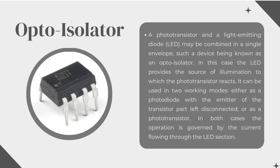Optoisolator. A phototransistor and a light-emitting diode (LED) may be combined in a single envelope; such a device is known as an optoisolator. The LED provides the source of illumination to which the phototransistor reacts. It can be used in two working modes: either as a photodiode with the emitter of the transistor part left disconnected, or as a phototransistor. In both cases, the operation is governed by the current flowing through the LED section.